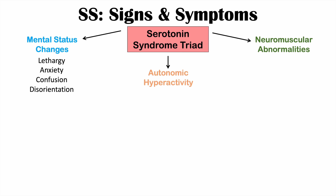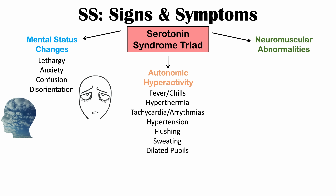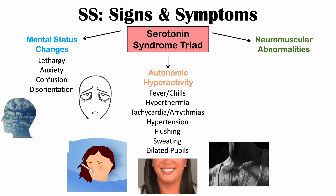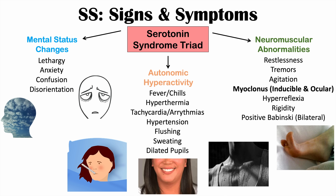Mental status changes can range from lethargy and anxiety to confusion and disorientation. Autonomic hyperactivity includes fever, chills, hyperthermia, tachycardia, arrhythmias, hypertension, flushing, sweating, and dilated pupils. Neuromuscular abnormalities include restlessness, tremors, agitation, myoclonus (which can be ocular clonus or inducible clonus), hyperreflexia, rigidity, and a bilateral positive Babinski sign. The key neuromuscular finding to remember is myoclonus.